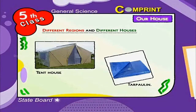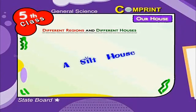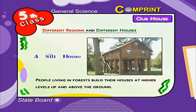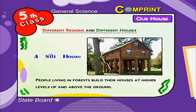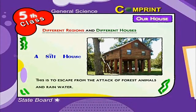A stilt house: People living in forests build their houses at higher levels, up and above the ground. This is to escape from the attacks of forest animals and rainwater.